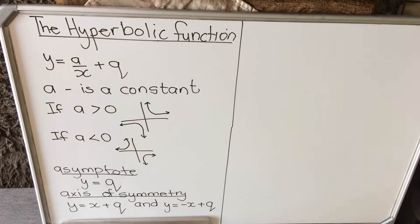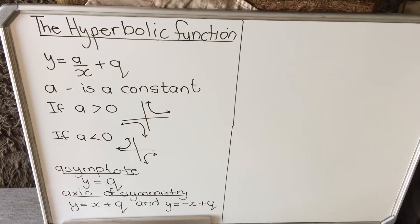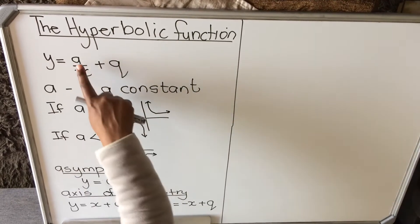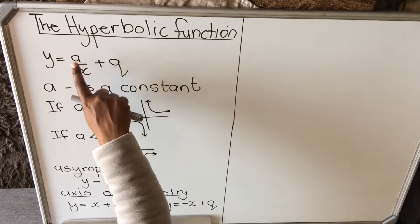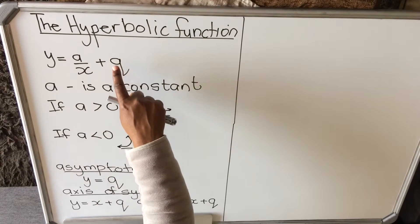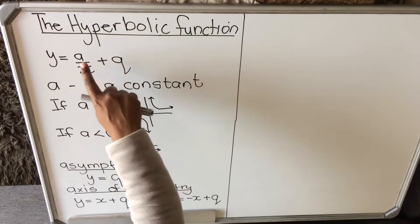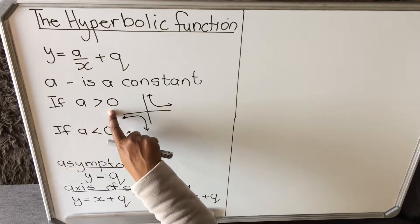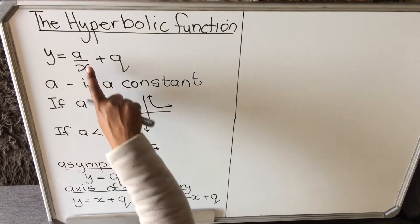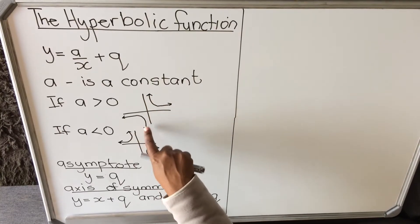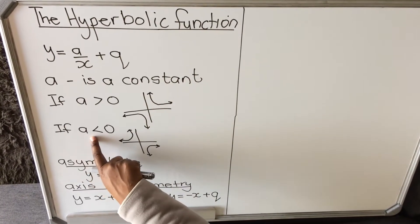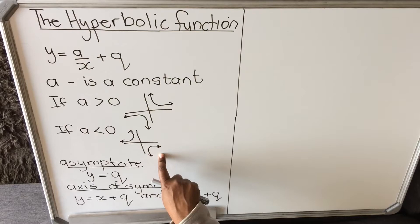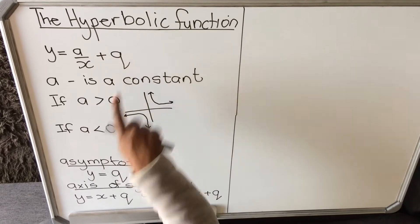With a straight line the x is linear, and with a parabola the x is squared, so with a hyperbolic function the x is a fraction. The constant a can be positive or negative, and q is also a constant. When a is greater than zero, meaning positive, your function will be in the first quadrant and in the third quadrant. When a is less than zero, meaning negative, it will be in the second quadrant and in the fourth quadrant.